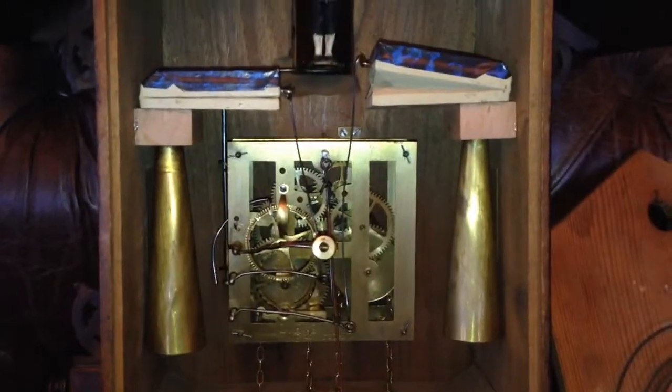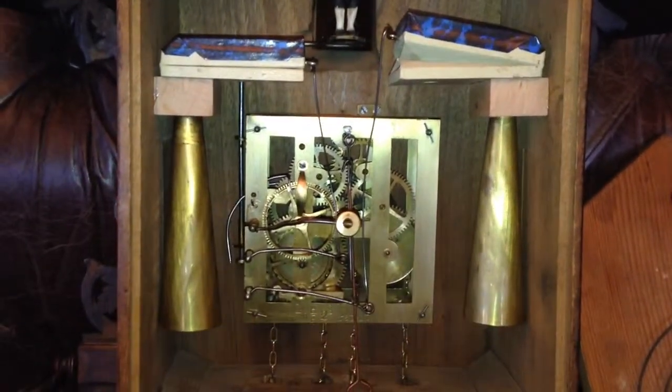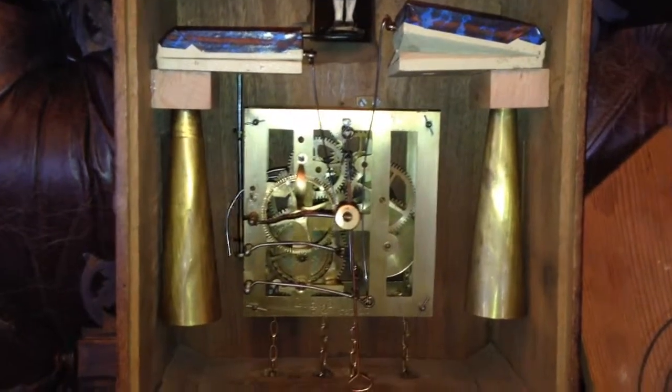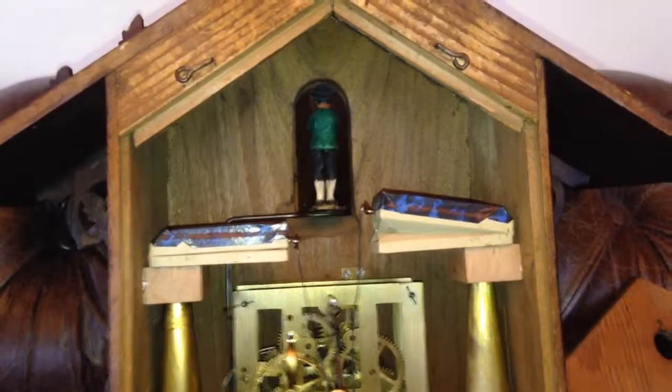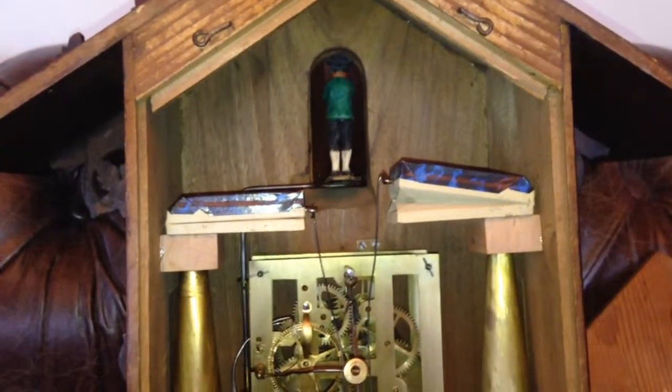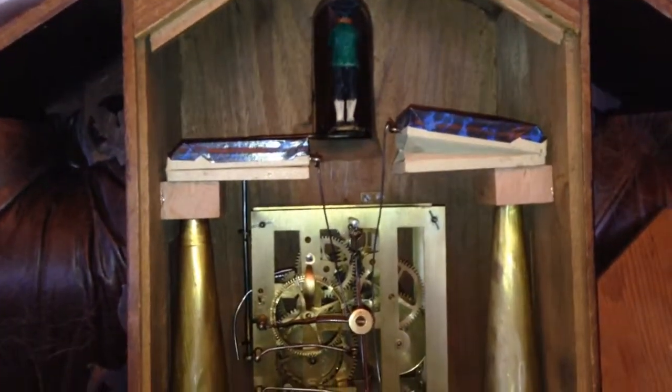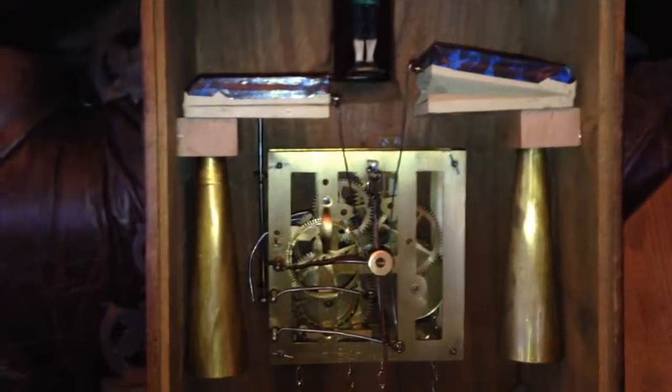Basically, what this clock does is reproduce the call of the trumpeter. Instead of the cuckoo bird coming behind the closed door, you have a trumpeter figure that appears behind those double doors, and then the movement reproduces that bugle call.